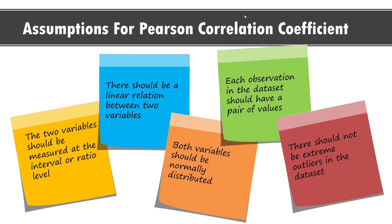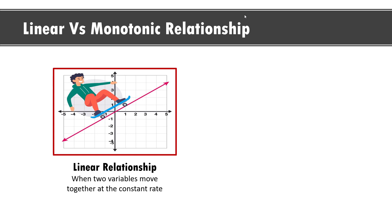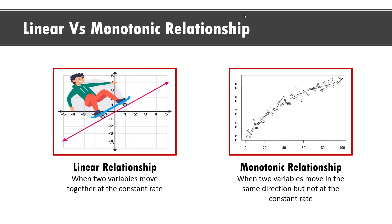Now let us talk about nonparametric correlation coefficients. But first, let us understand the difference between linear and monotonic relationships. When two variables move together at a constant rate, they have a linear relationship — think of a straight line. A monotonic relationship measures how likely it is for two variables to move in the same direction but not necessarily at a constant rate. For example, an upward exponential curve would have strictly positive monotonicity because as x increases, y also increases, but the curve is not linear and the rate y changes varies at different values of x.